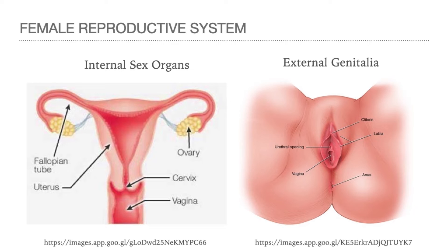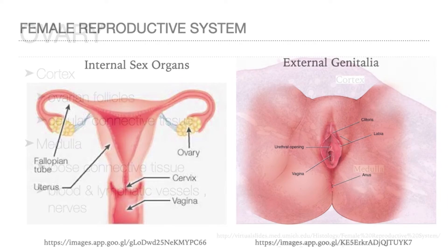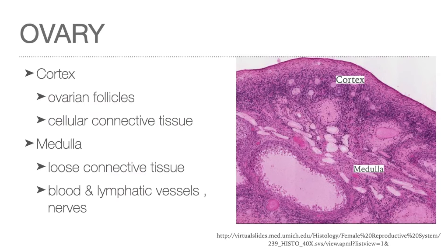The female reproductive organs are composed of the internal female organs and the external genitalia. Its development is not complete until after puberty is initiated. The ovary has two general areas: the cortex, which contains the ovarian follicles, and the medulla, the connective tissue core, which contains collagen fibers, occasional smooth muscle cells, and numerous blood vessels. There is no clear demarcation between the cortex and the medulla.